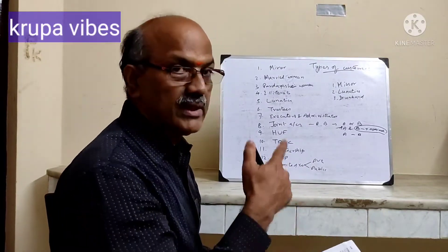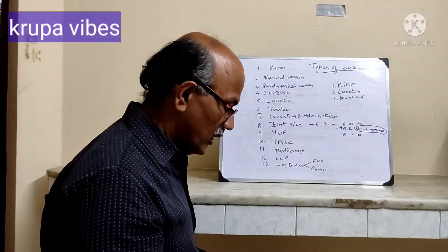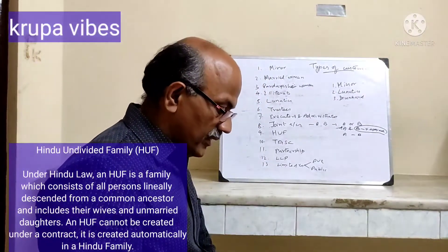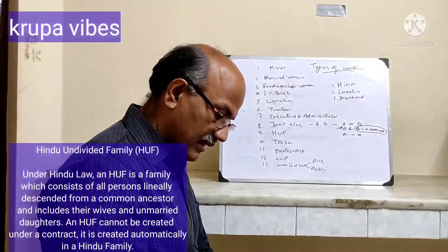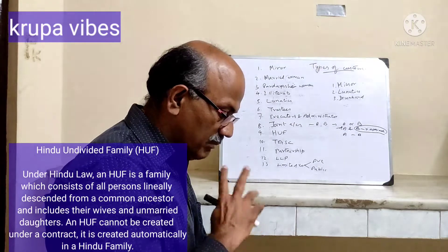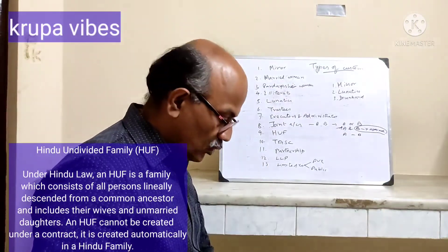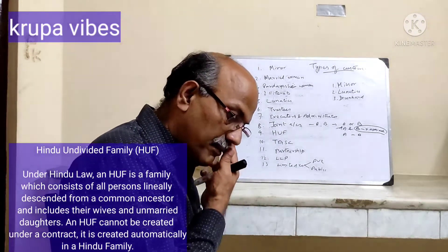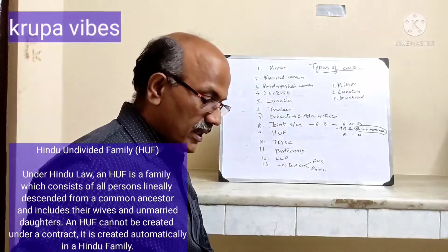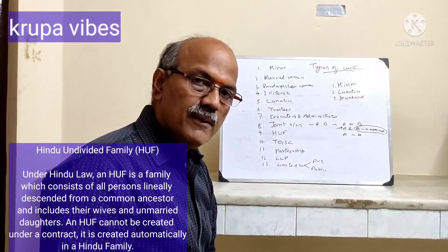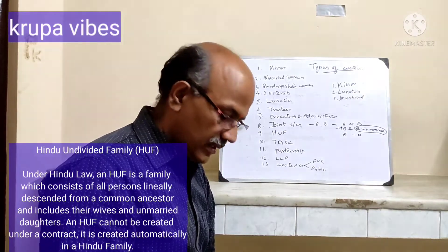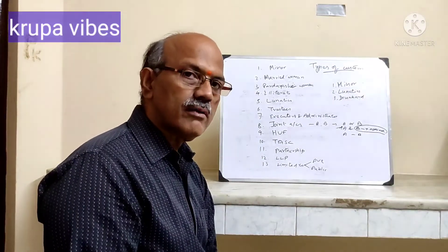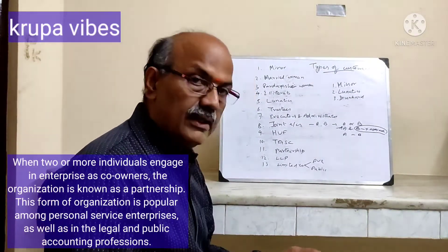For Hindu Undivided Family (HUF), where ancestral business is managed — it was earlier under the Hindu Succession Act 1956, which stated only male members would be the Karta and co-parceners. After the amendment in September 9, 2005, even female members can be co-parceners, and wife and daughters also have equal share in the HUF business. Female co-parceners can also act as Karta, which was not available earlier, and they can also create mortgage.